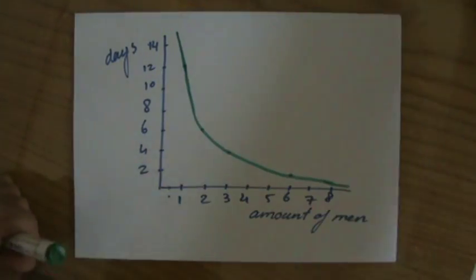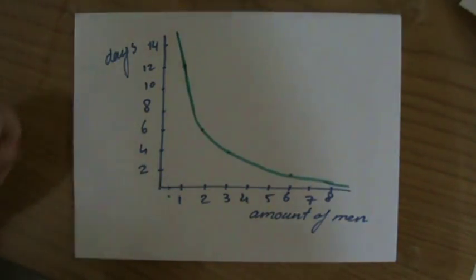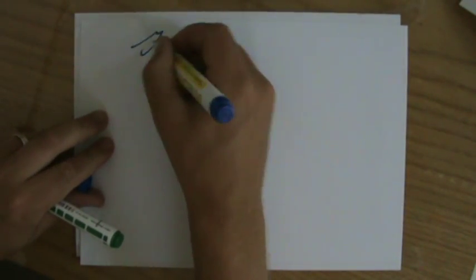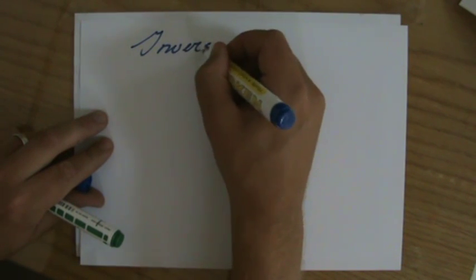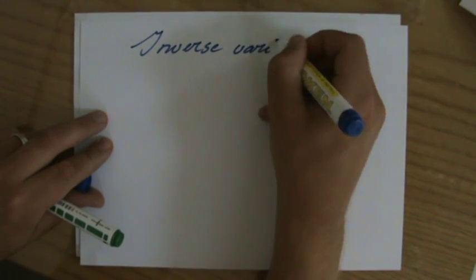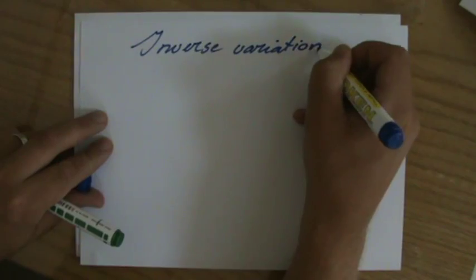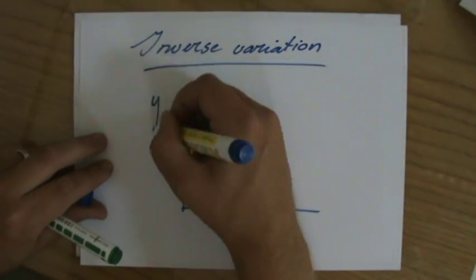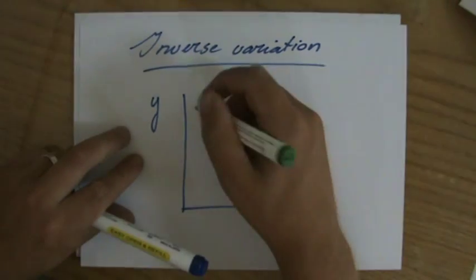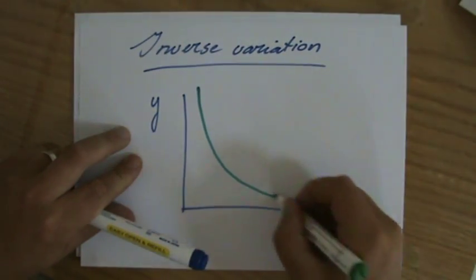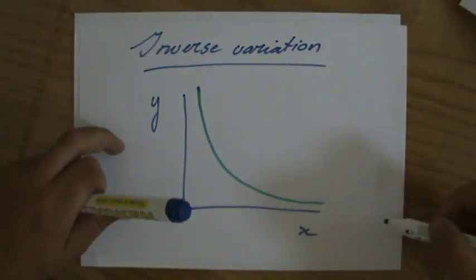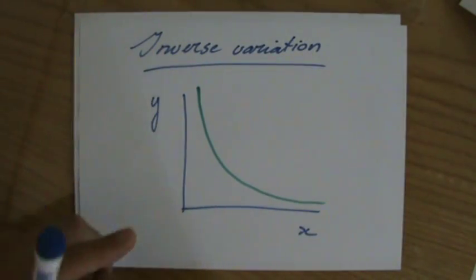So for inverse variation or inverse proportion, I really don't like my sketch here, so I'm just going to do a general sketch for inverse variation. If you would sketch that, if that is your y-axis, that's your x-axis, it is going to be a curve which roughly looks like this. It's going to approach the y-axis, it's going to approach the x-axis, but it's never going through.